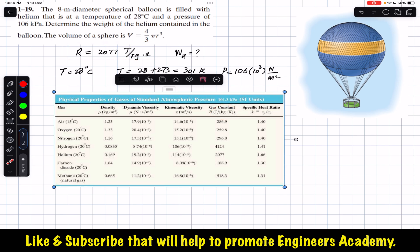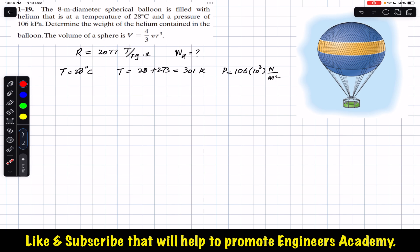And we are given that the temperature is 28°C. Since we are using the gas constant in joules per kg Kelvin, we must convert this temperature into Kelvins, so 28 + 273 = 301 Kelvins. And the pressure is given in kPa, so kilo is 10³, 106 × 10³, and Pascal is Newton per meter squared.